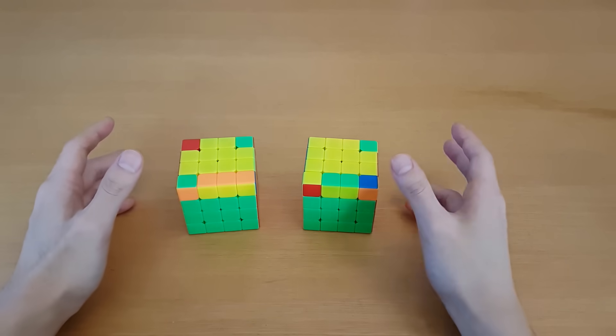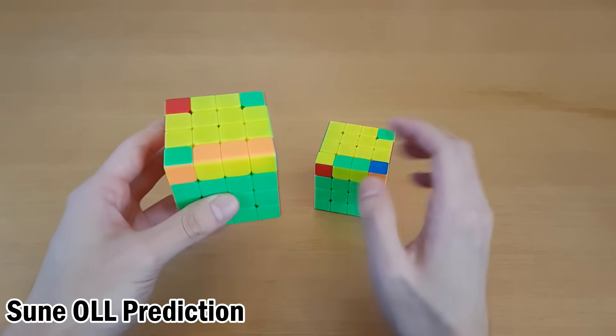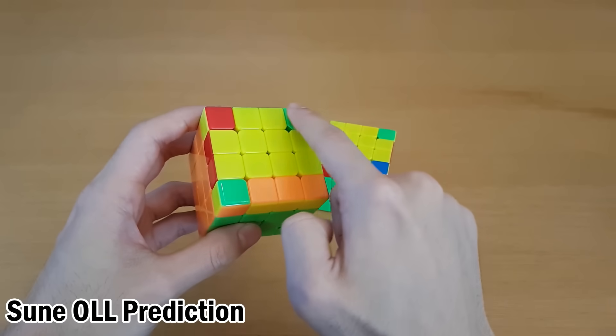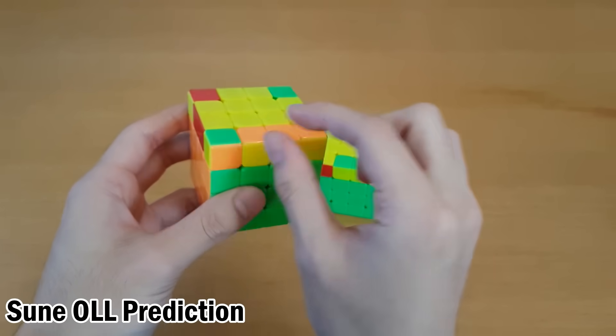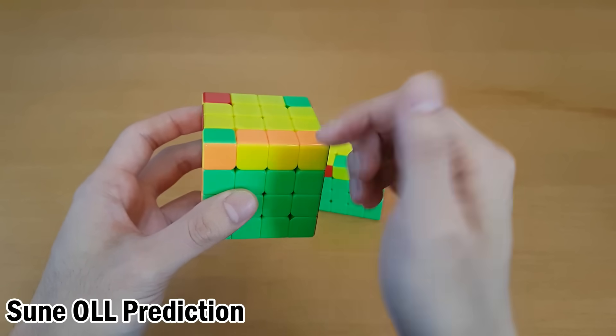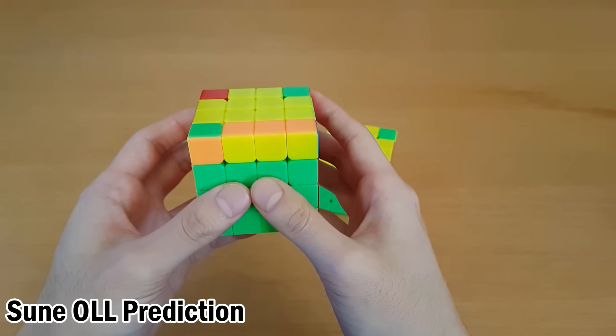All right, so the first category of cases we'll look at is ones that give you a soon case. So in this case, we have no oriented corners already, but when you do the OLL Parity algorithm, the front corners will change orientation.